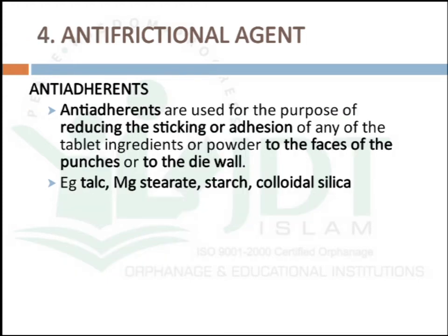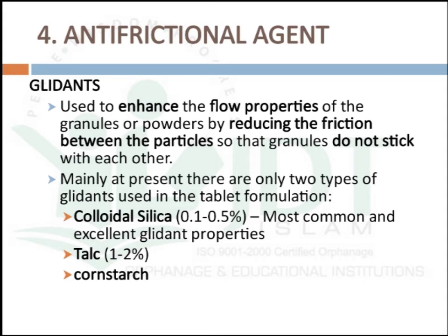Anti-adherents are anti-frictional agents used to reduce sticking or adhesion of tablet ingredients or powder to the punch faces. Examples are talc, magnesium stearate, starch, and colloidal silica. Glidants are anti-frictional agents used to enhance the flow property of granules or powder by reducing friction between particles so that granules do not stick to each other. Examples are colloidal silica at 0.1 to 5% (most common, with excellent glidant properties), talc at 1 to 2%, and corn starch.